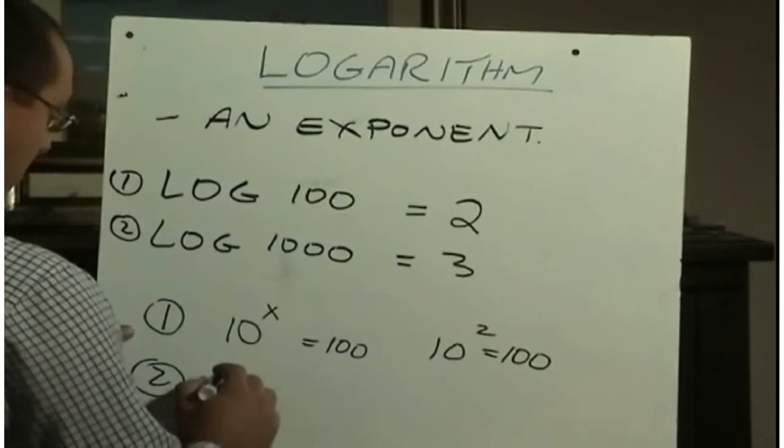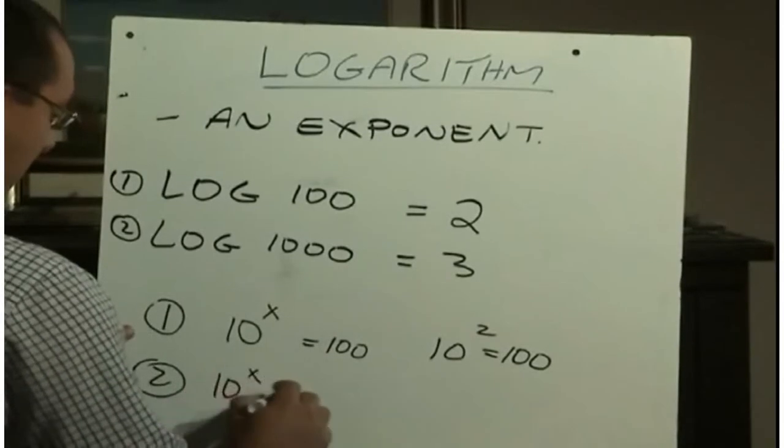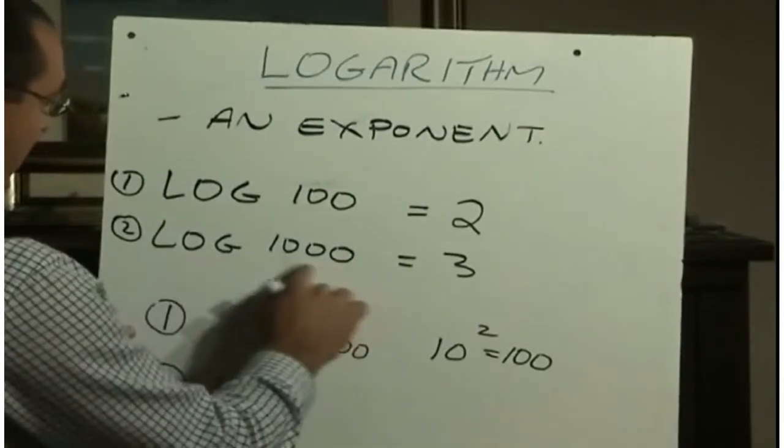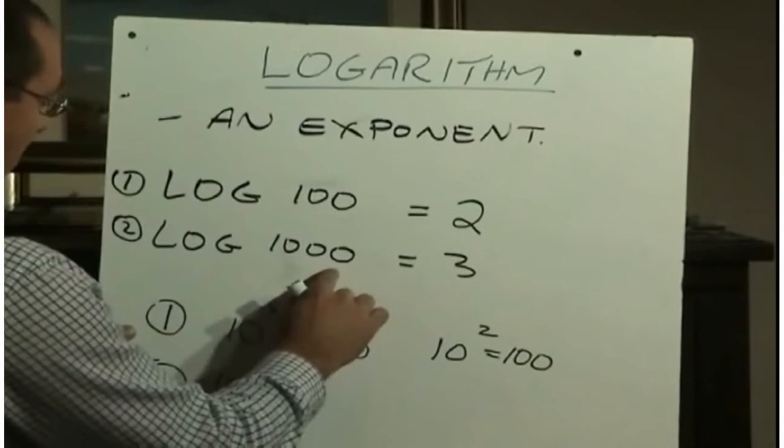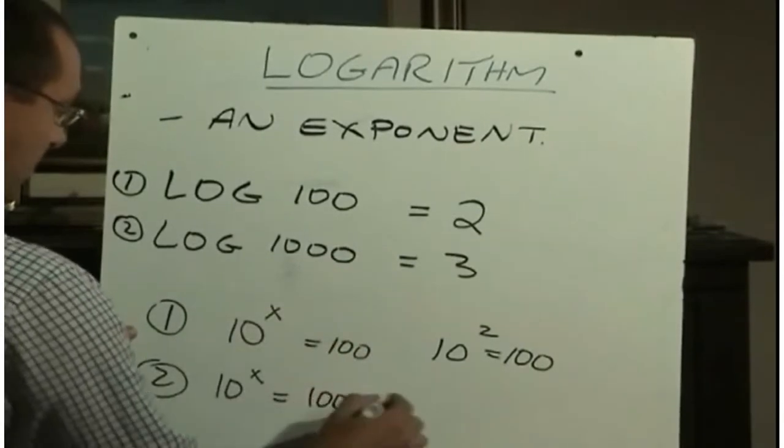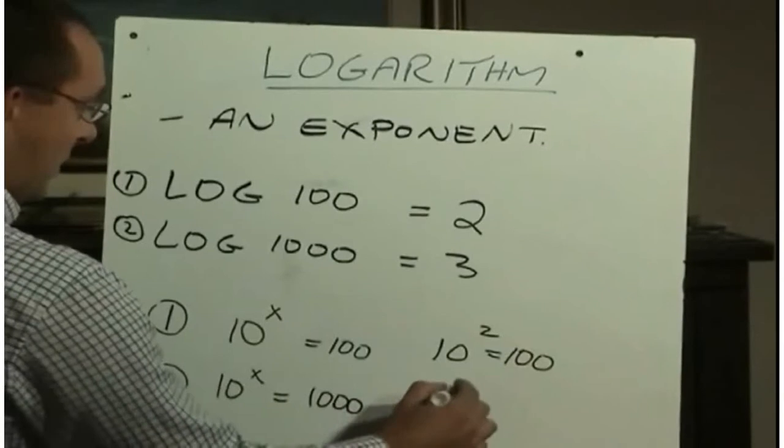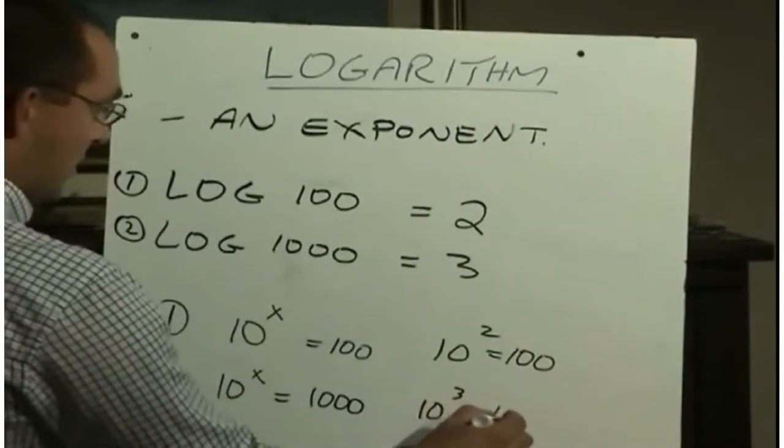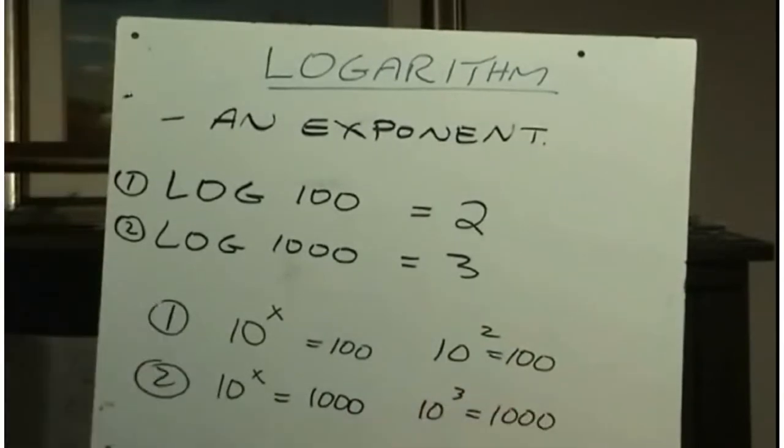And in question 2, we ask, really what this is asking is what is the exponent on 10 that would equal 1000? Well, that's why the answer is 3, because 10 cubed is 1000.